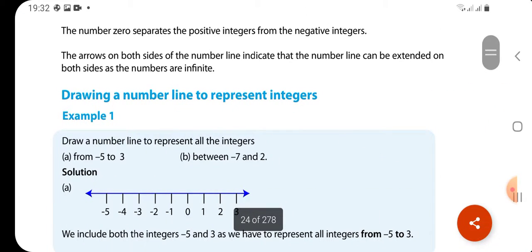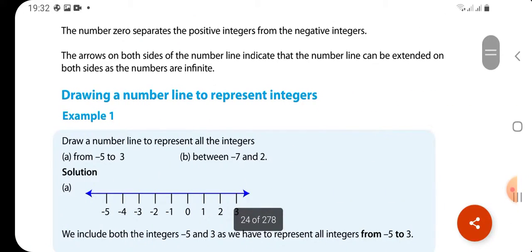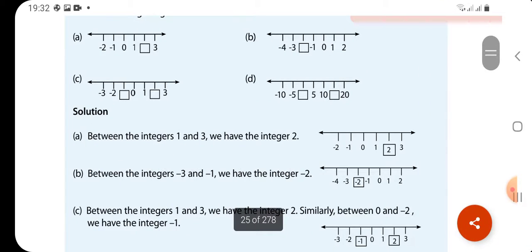To represent integers between negative 7 and 2. Look here, it is from negative 5 to 3. You must include negative 5 and 3. The second one is between negative 7 and 2. Between negative 7, we do not include negative 7. We do not include 2. We need to represent it. Negative 6, negative 5, negative 4, up to 1. And 2 is not included. Negative 7 is not included.